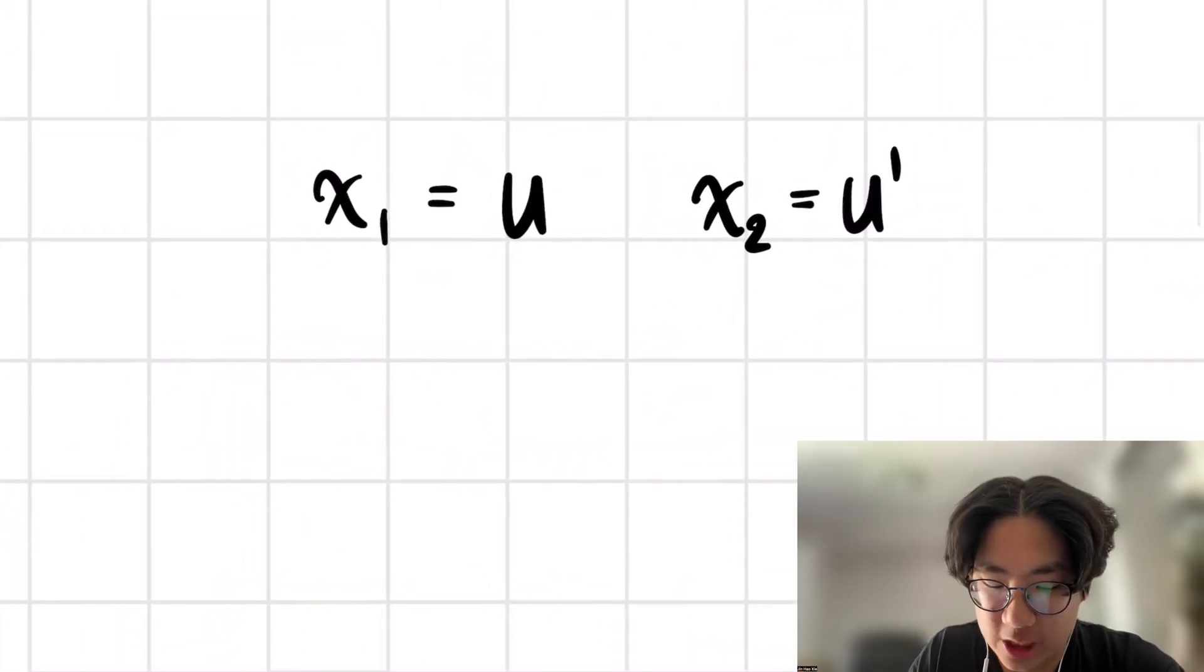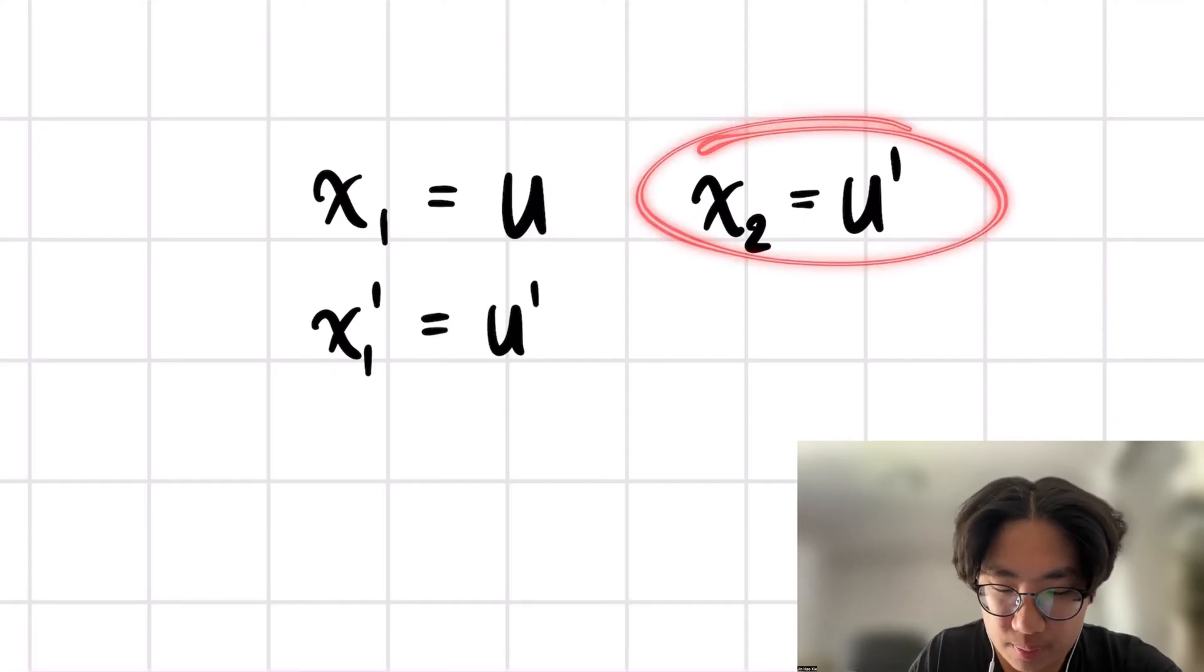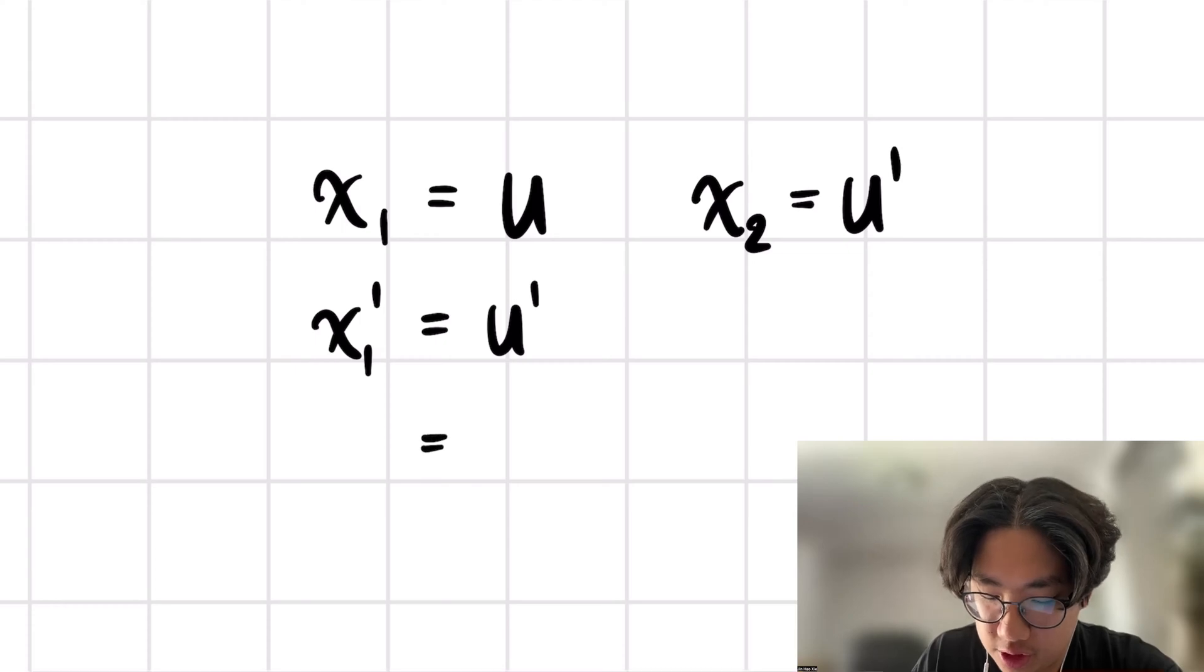From here, we can then take the derivative of both sides. So we have x1 prime is equal to u prime. But what we also then notice is that x1 prime is also equal to x2.